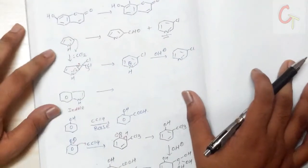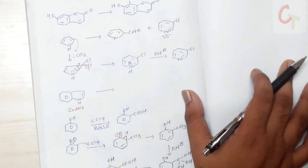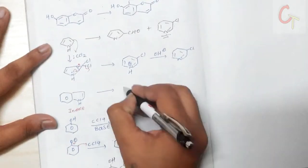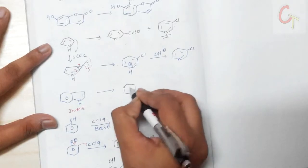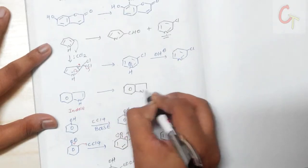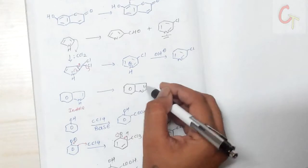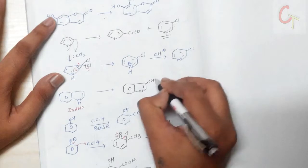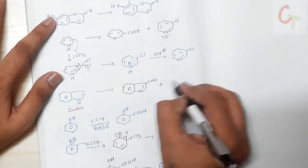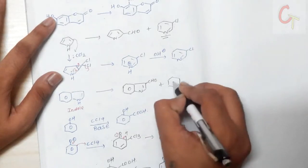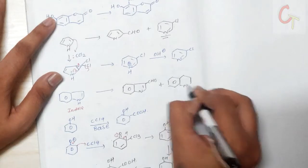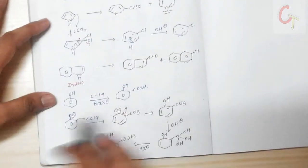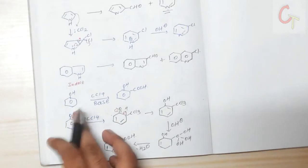Indole also reacts with the same reagents under the same conditions, giving a similar ring-expansion product analogous to the pyridine-like chlorinated structure seen with pyrrole.